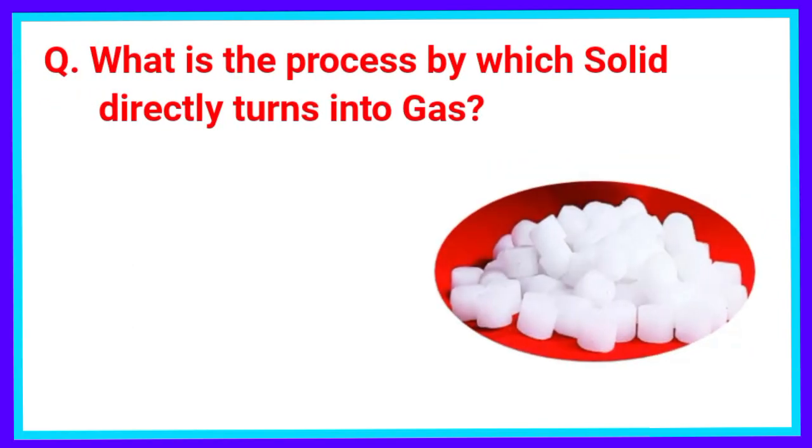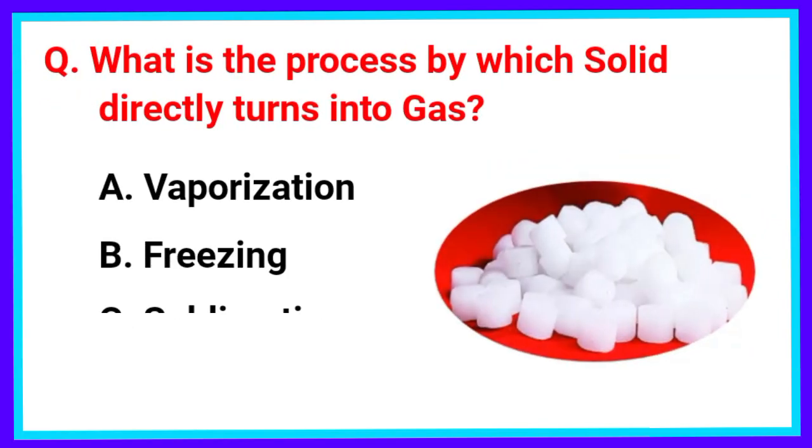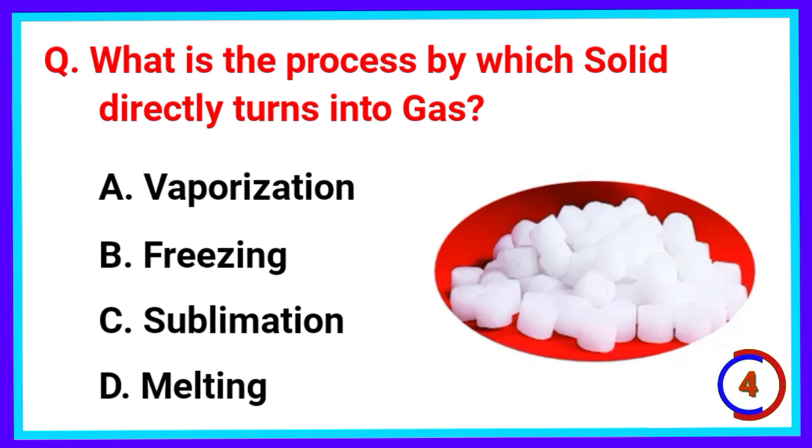What is the process by which solid directly turns into gas? The correct answer is Option C. Sublimation.